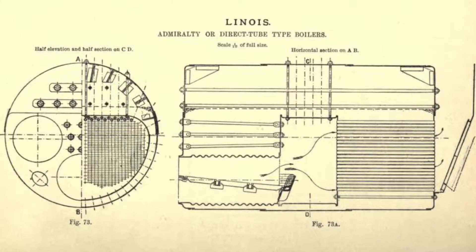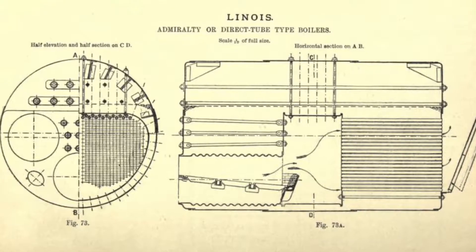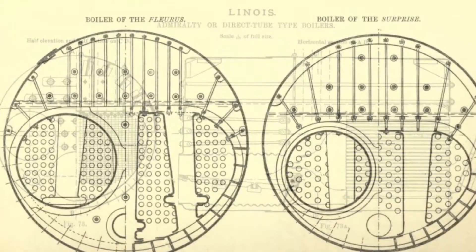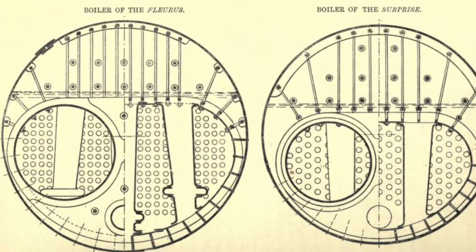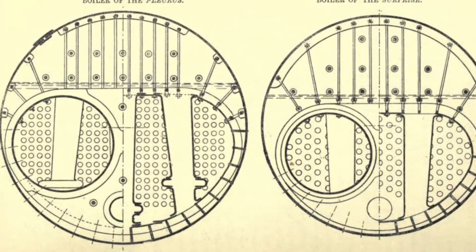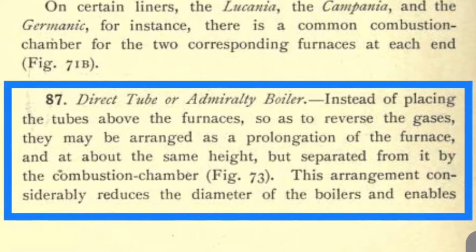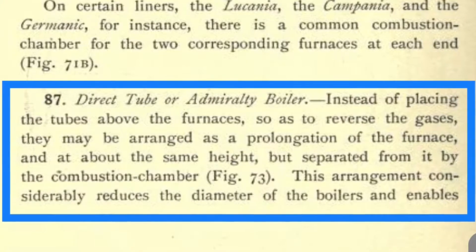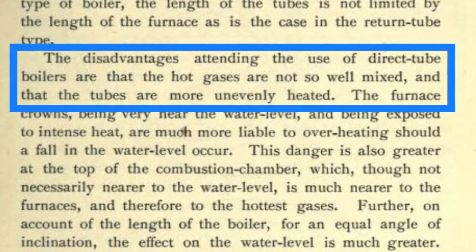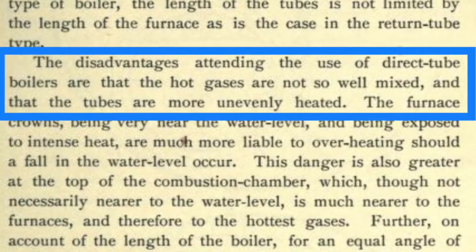The admiralty type direct tube boiler is an unpopular design that has not been widely used since its appearance during the ironclad warship era in the mid-19th century. Its unpopularity was largely due to the fire tube design being connected directly to the combustion chamber, which frequently caused overheating of the pipes.